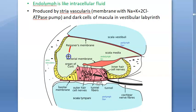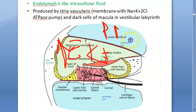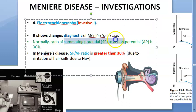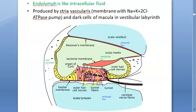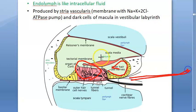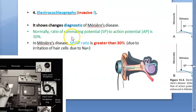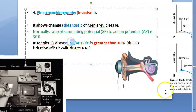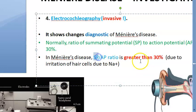Endolymph contains potassium, while perilymph contains sodium. When the distended endolymphatic membrane bulges and ruptures, sodium from the perilymph enters and irritates the hair cells. Summation potential relates to the outer hair cells, while action potential relates to the auditory nerve. Because sodium irritates the hair cells, summation potential increases, making the SP/AP ratio greater than 30%.